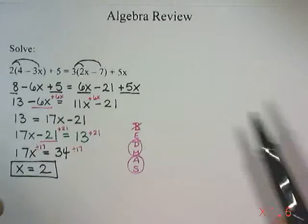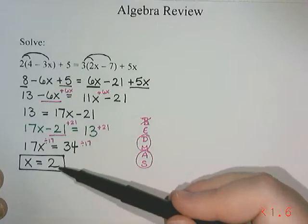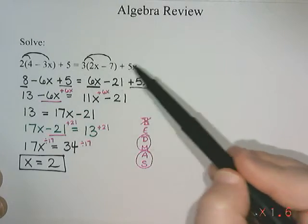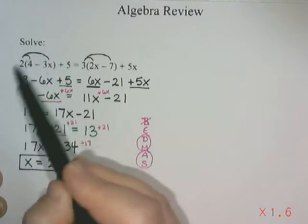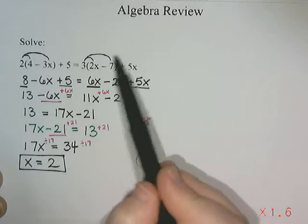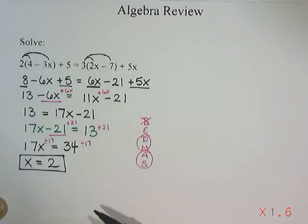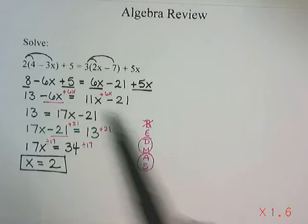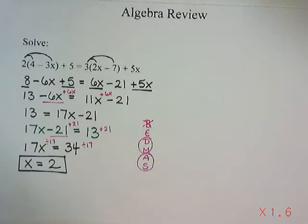Now if I wanted to check my answer to see if it was correct, I could put the 2 in everywhere I see an x, and then calculate the left side, see what number we get, calculate the right side, see what number we get, and then check to make sure that we got the same value for both sides. But the question didn't ask us to check, so we're just going to stop at an answer of x equals 2. And that's solving equations with brackets and terms on both sides.